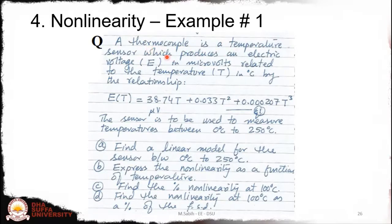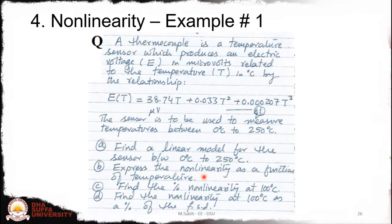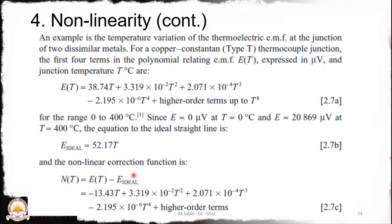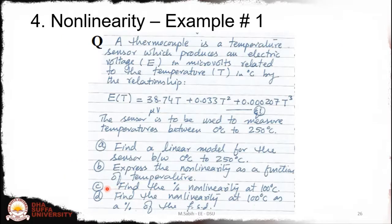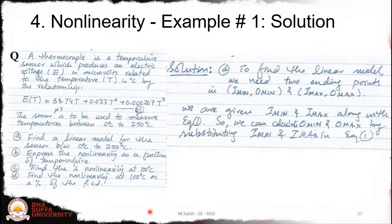Example 1: A thermocouple temperature sensor produces an electrical voltage in microvolts related to temperature in degrees centigrade by: E(T) = 38.74T + 0.033T² + 0.000207T³. This sensor is used over the range 0 to 250°C. You must: (A) find a linear model over 0 to 250°C, (B) find the nonlinearity function n(T) using E(T) minus E_ideal, and (C) find the percentage nonlinearity at 100°C as a percentage of full-scale deflection.